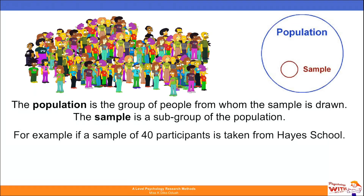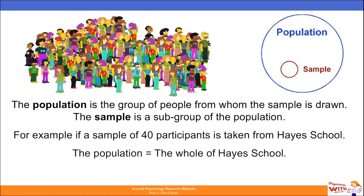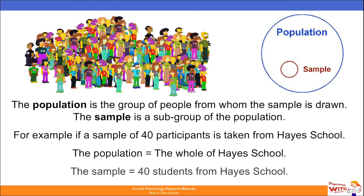For example, if a sample of 40 participants is taken from Hayes school, the population is the whole of Hayes school and the sample would be the 40 students from Hayes school that are included in the piece of research.